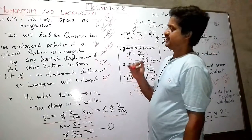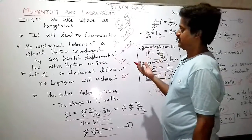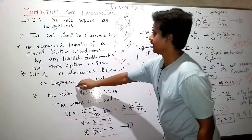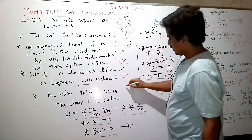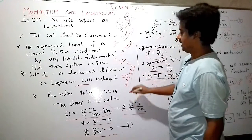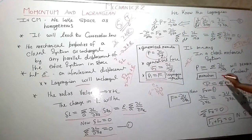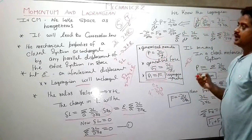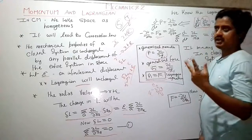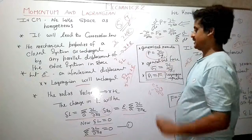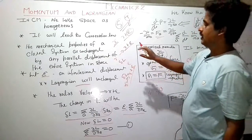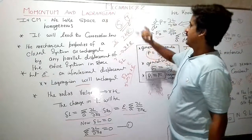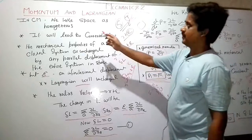Due to the homogeneous nature of space in classical mechanics, this homogeneity leads to the conservation law called conservation of momentum. We derived it using the Lagrangian of any closed system by making an incremental displacement from r to r plus δ. Together with conservation of energy from homogeneity of time, these are two important conservation laws. In the next video, I will solve problems related to the Lagrangian and momentum.